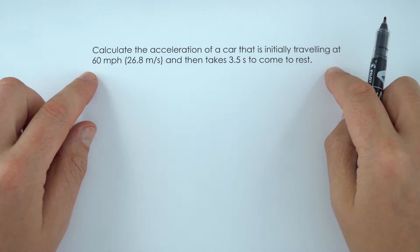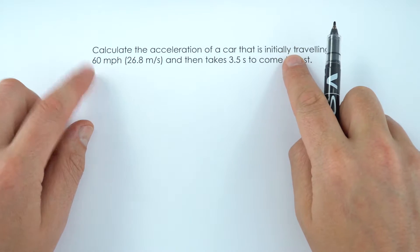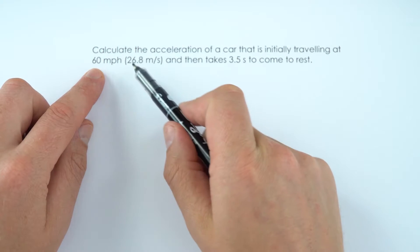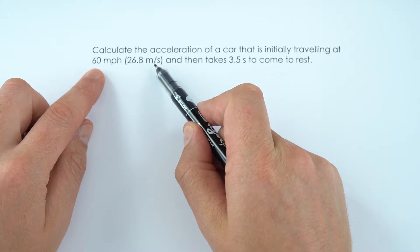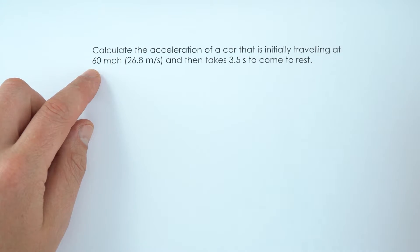In this question we're going to calculate the acceleration of a car that's initially traveling at 60 miles per hour, given here as 26.8 meters per second, and then it takes 3.5 seconds to come to rest.